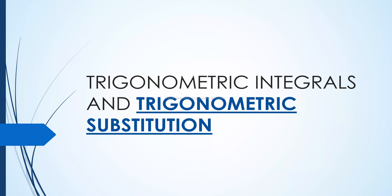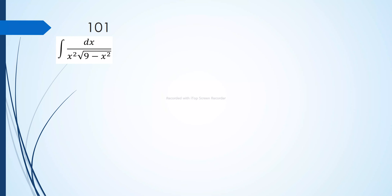We're continuing our discussion on trigonometric substitution. Let's apply those ideas to our first problem: the integral of dx over x squared times the square root of 9 minus x squared. This is similar to the inverse secant form, but unfortunately we cannot apply the standard inverse trigonometric integration rule here, nor other trigonometric integration rules. So we will use trigonometric substitution.